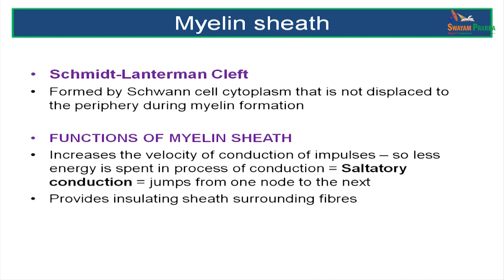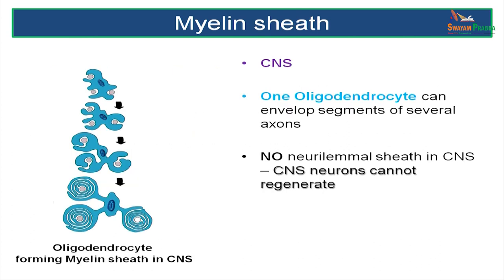The myelin sheath protects the neuron, provides the nodes and internodes, and helps in faster conduction called saltatory conduction. In the central nervous system, the cell forming the myelin sheath is the oligodendrocyte, and one oligodendrocyte can form myelin sheaths for several axons. But there is no neurolemmal sheath, so there will be no regeneration or repair of neurons in the central nervous system — always remember this.